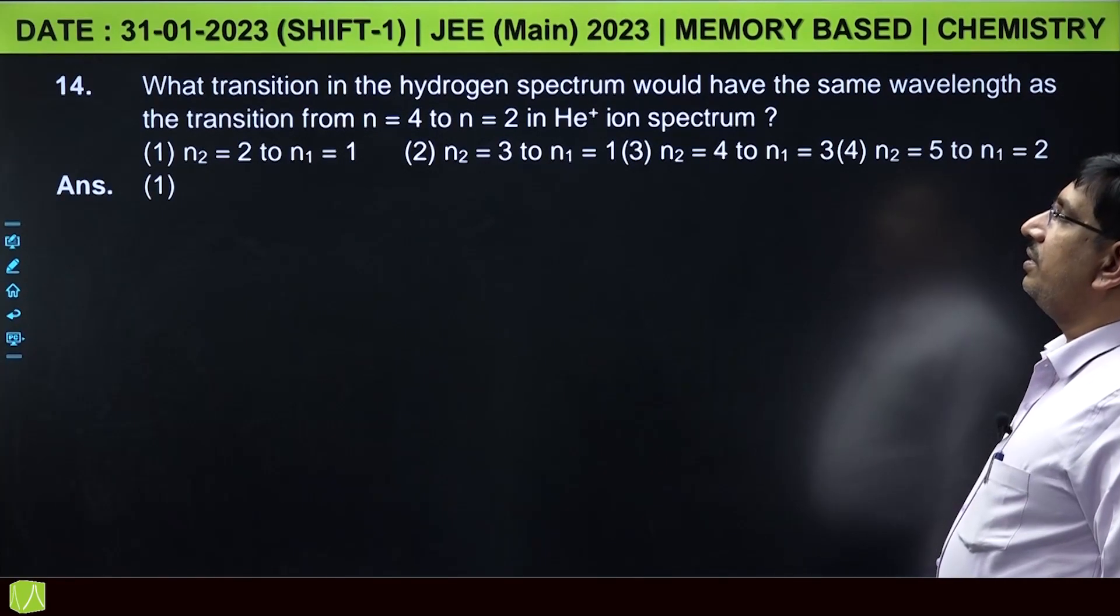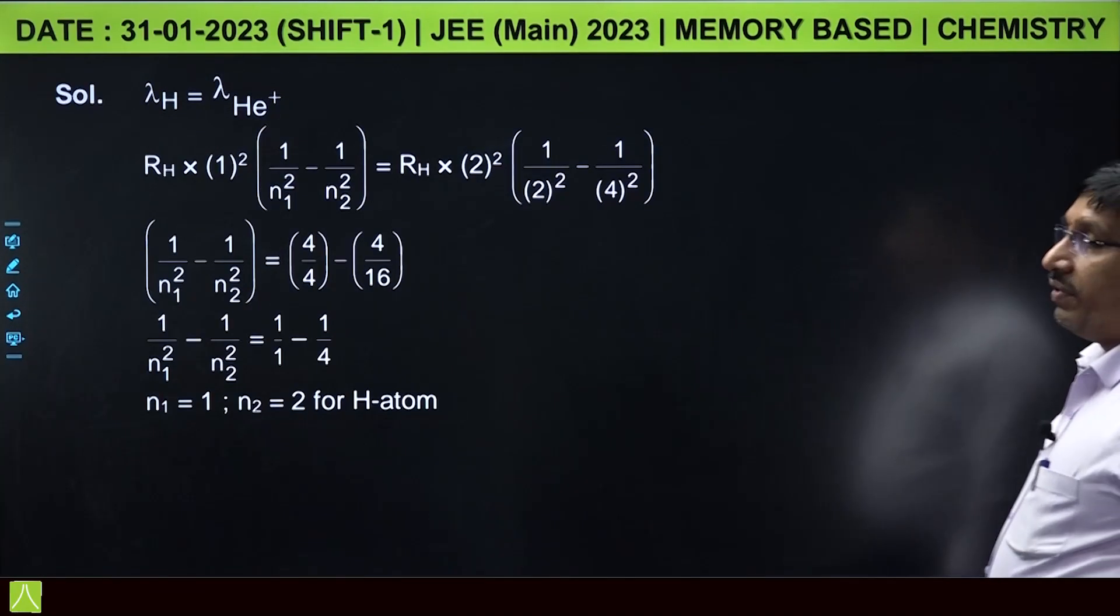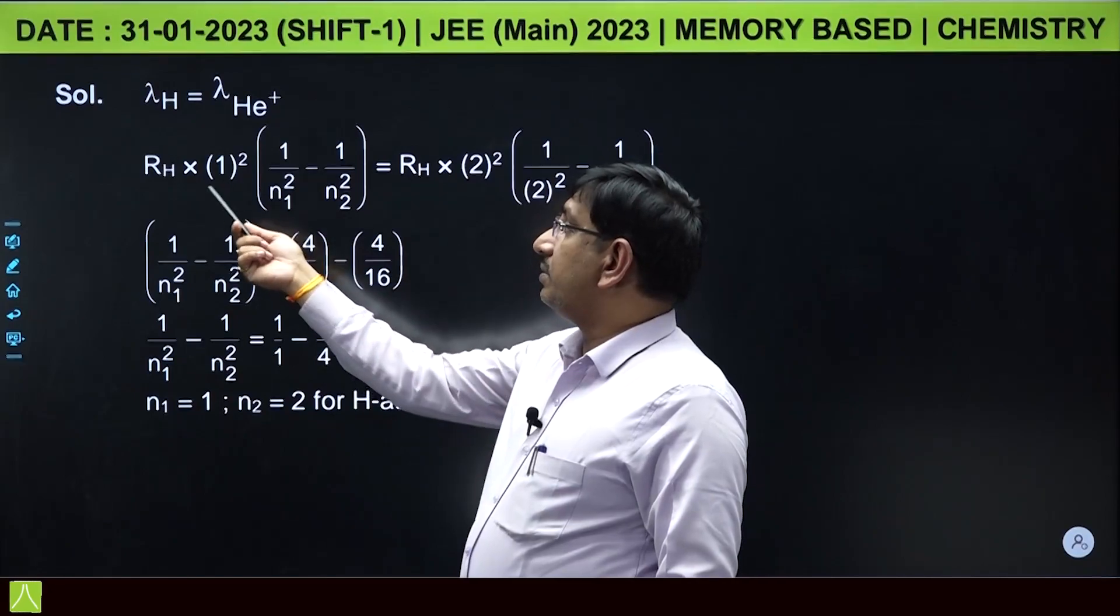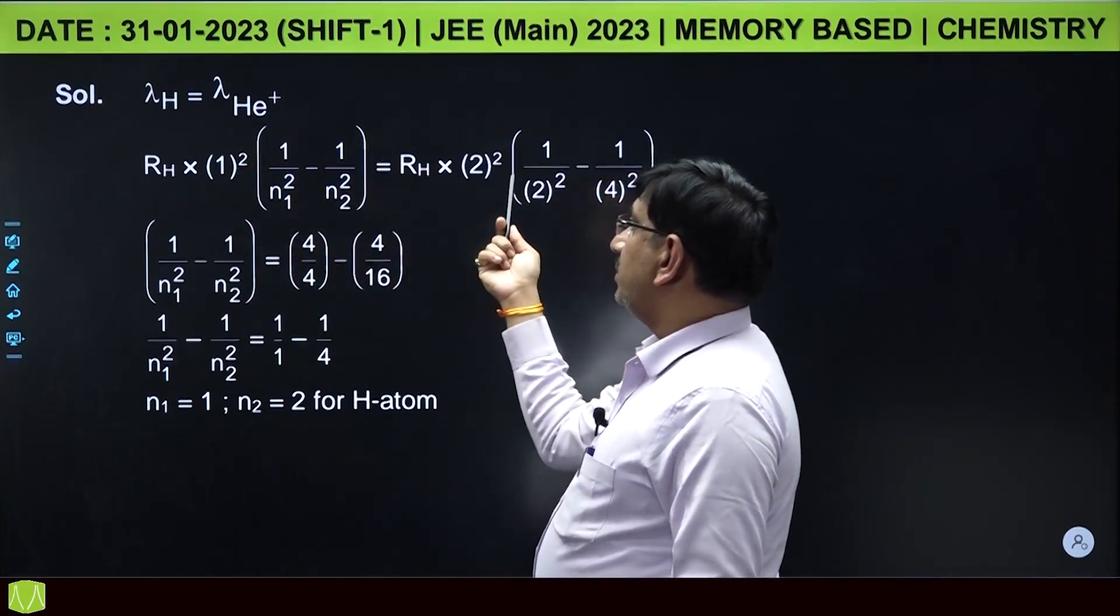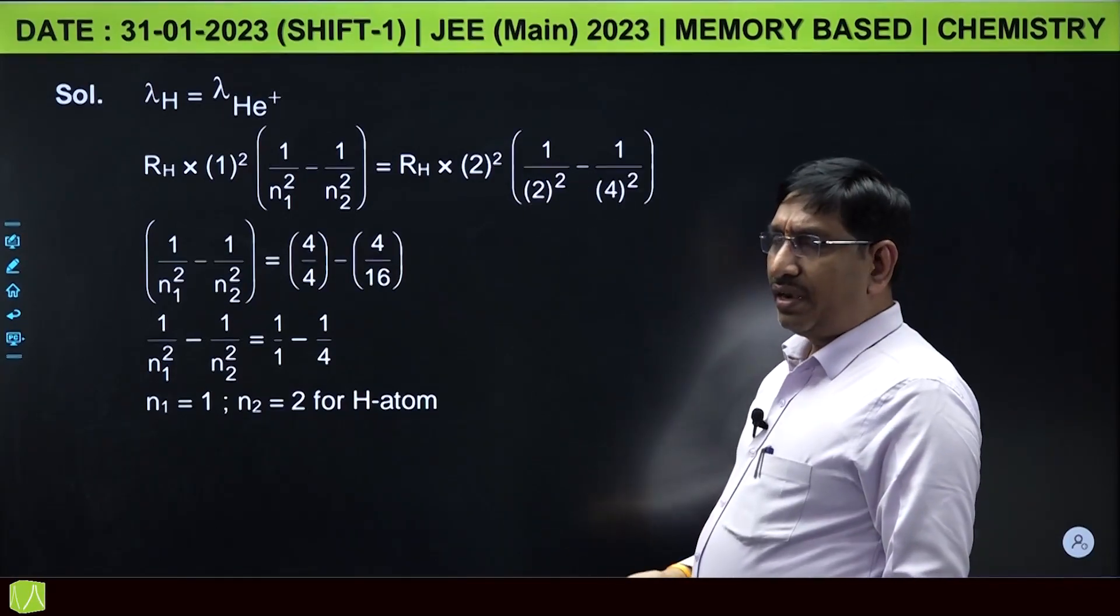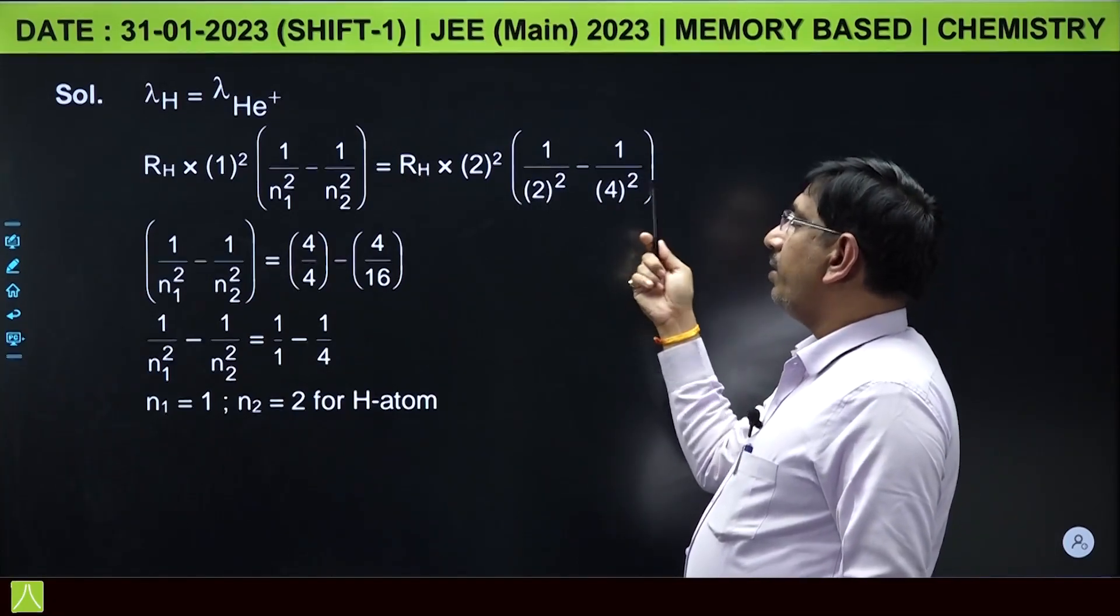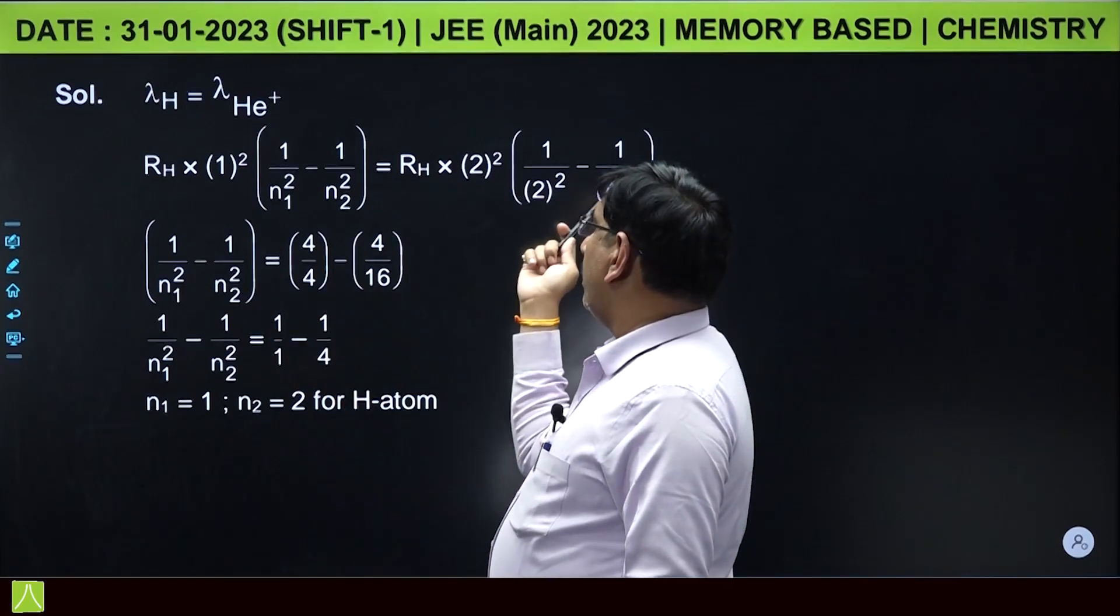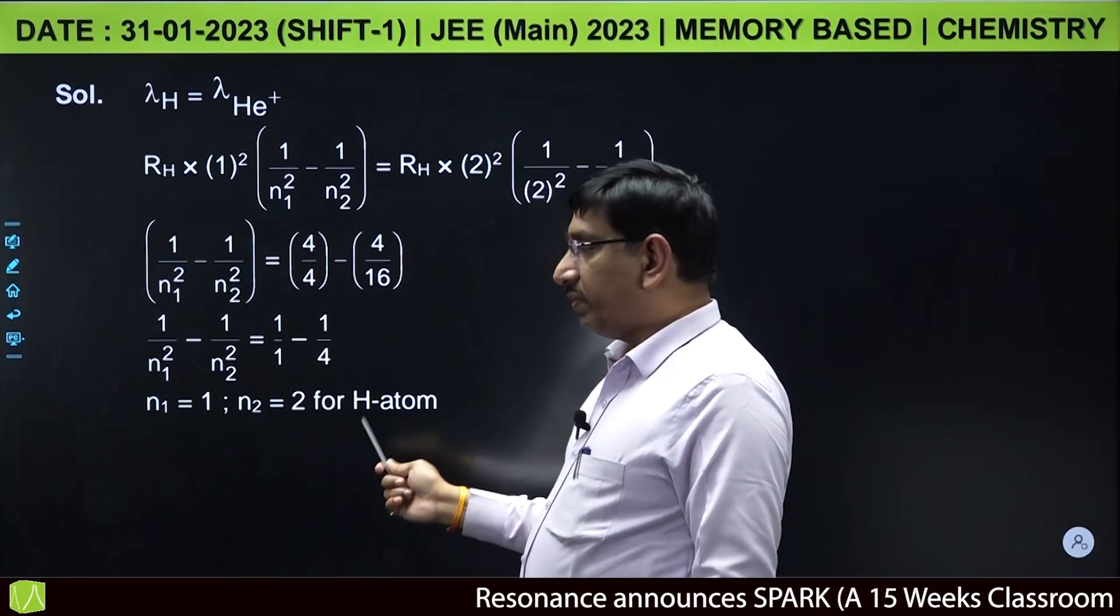What transition in the hydrogen spectrum would have same wavelength as the transition from n equal to 4 to n equal to 2 in helium plus ion spectrum? Here wavelength of hydrogen and wavelength of helium plus should be same. By applying the Rydberg's equation Rh into z square into 1 by n1 square minus 1 by n2 square. Here for hydrogen z value is 1, for helium z value is 2, and n1 n2 values for helium are given 4 and 2. In the Balmer region it is n1 value is 2, n2 value is 4. It is 1 by n1 square minus 1 by n2 square equal to, on calculation it is 4 by 4 minus 4 by 16, and on equating this n1 value is 1 and n2 value is 2 for hydrogen atom.